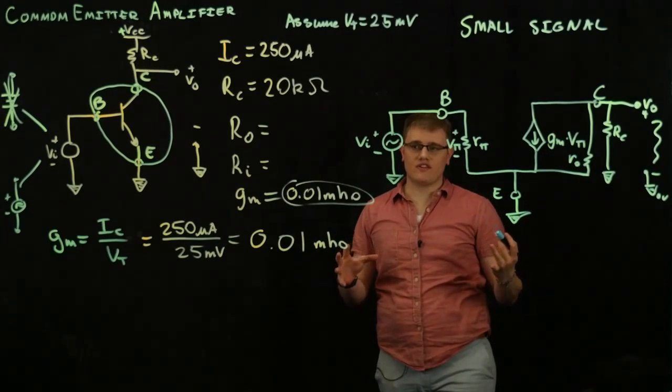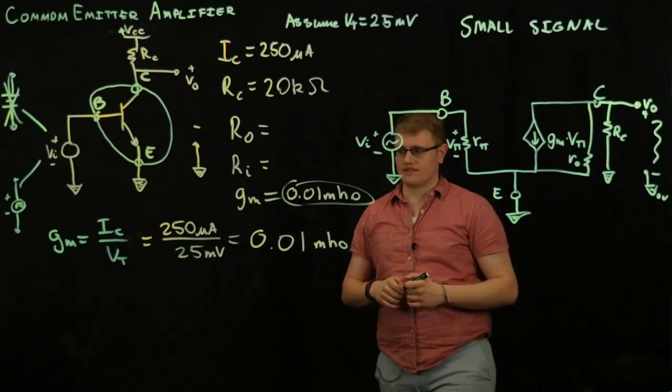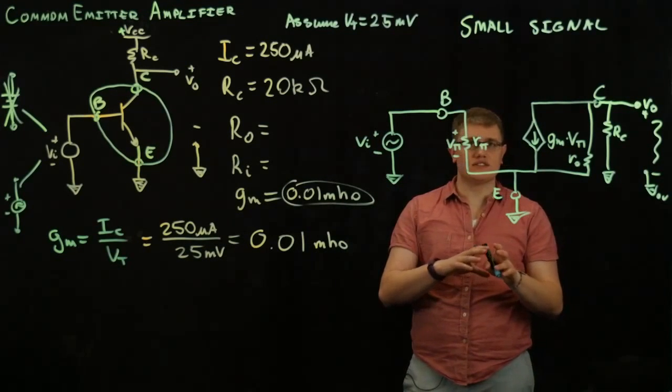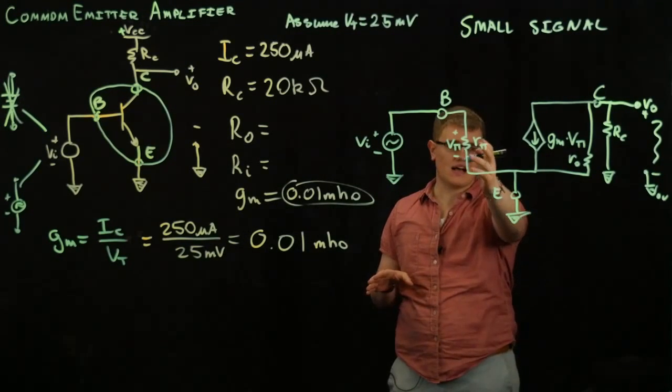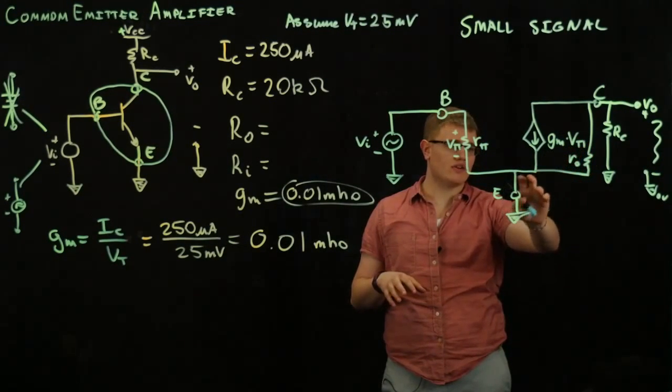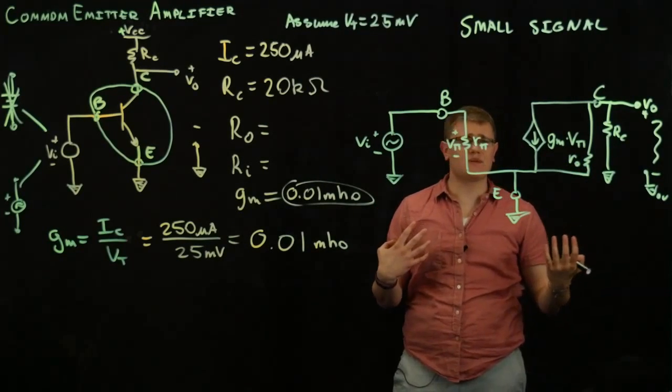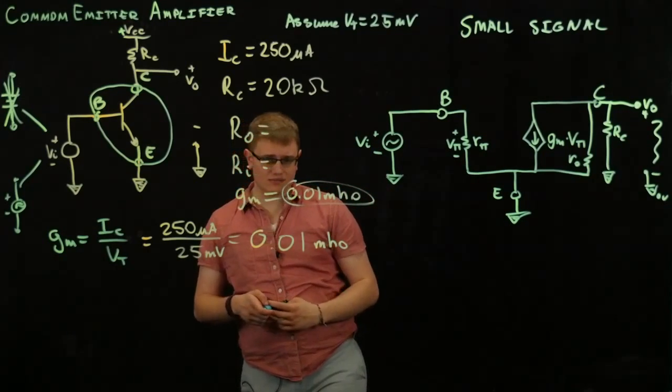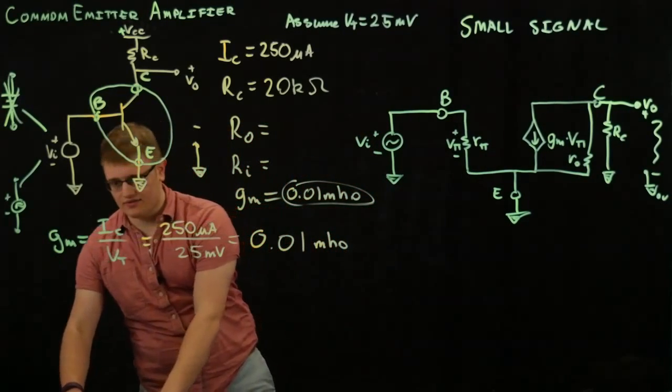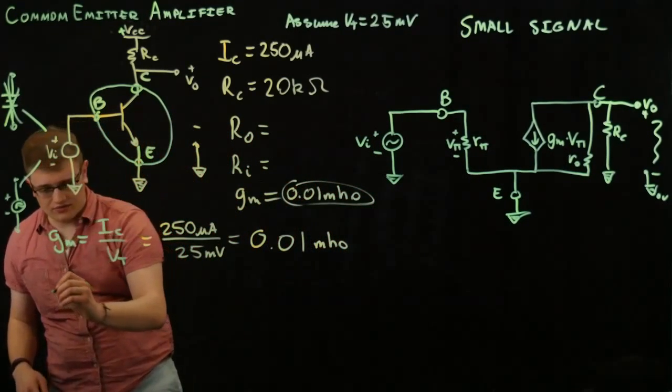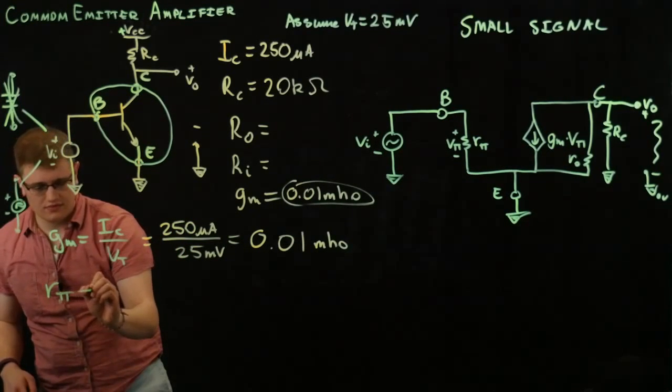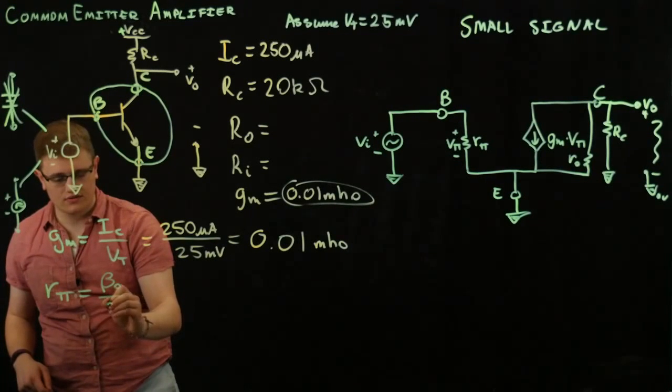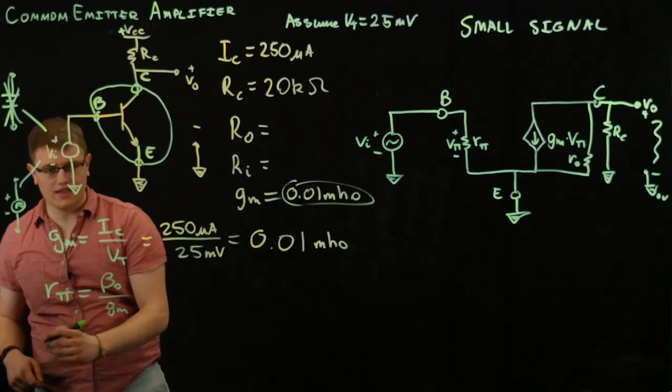Now, we have to start finding our RO and RI. But before we do that, we have a couple of equations that are related to the small signal analysis. We have R pi, we have GM, V pi, we have all these things, RO that you might not be familiar with. But there are some equations that are related to them. I'm going to write them down right here for you. We have R pi over here,